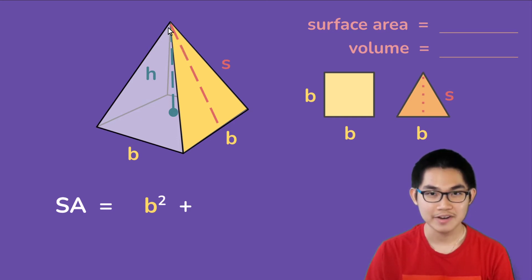So how many sides are there to a pyramid? There is one which is this side, two, three, and four. So there are four sides or four triangles in total in the pyramid.